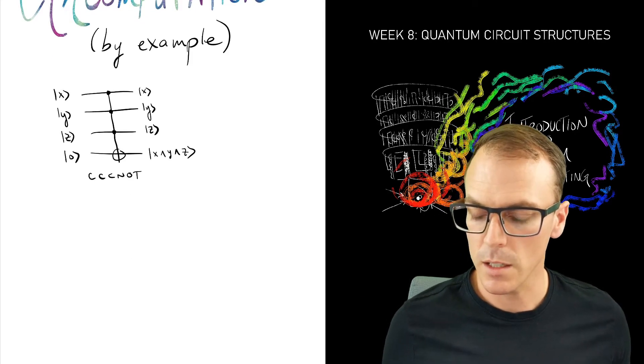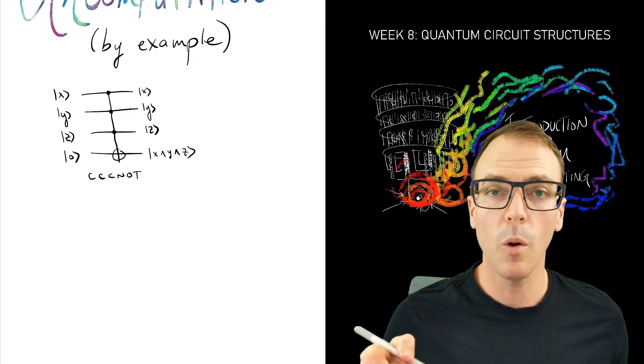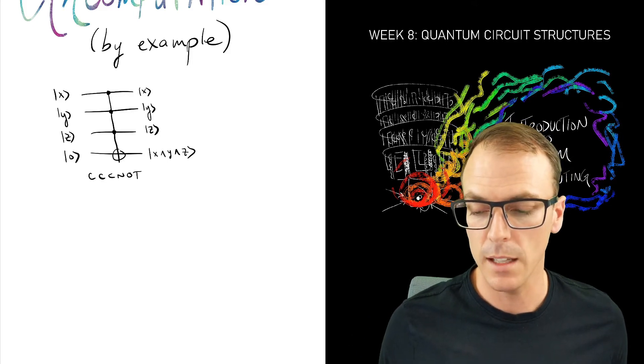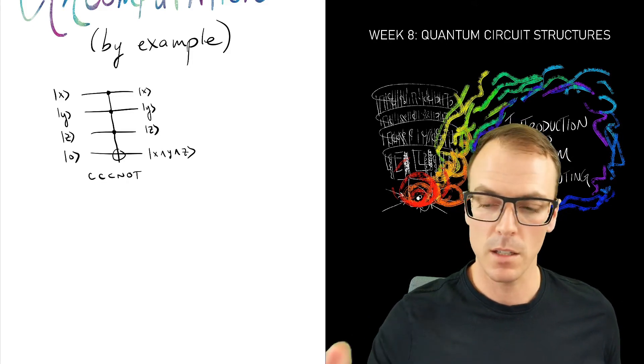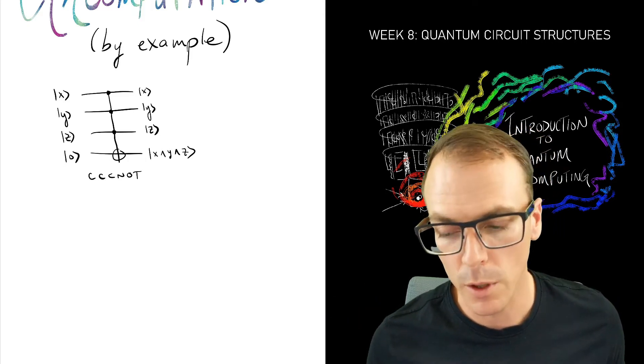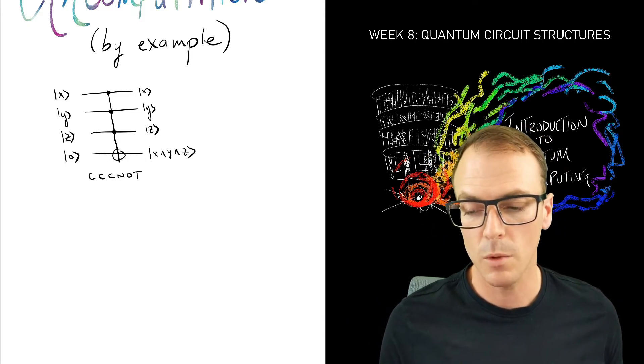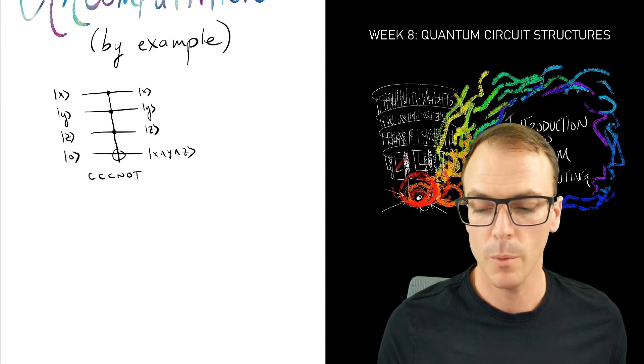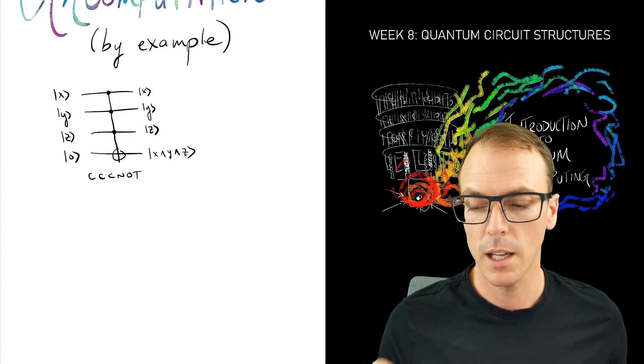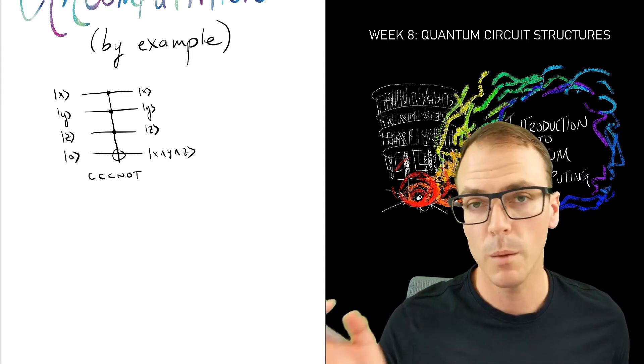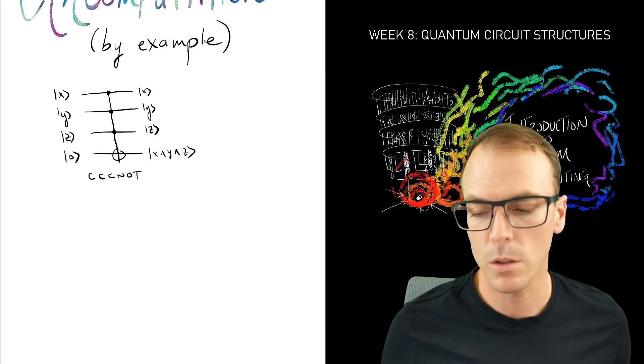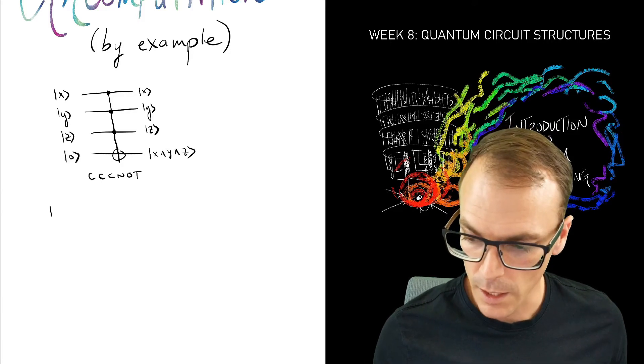The question is, can we perform this gate with only Toffoli gates? So this is an interaction between four qubits. The question becomes, can we perform the same operation with interactions of only three, maybe two qubits? But let's do three. The answer is yes.